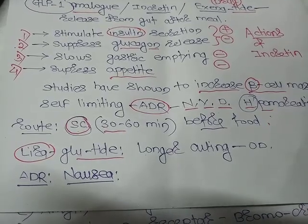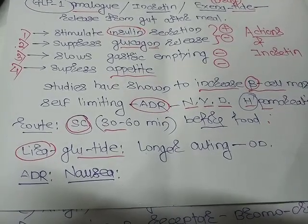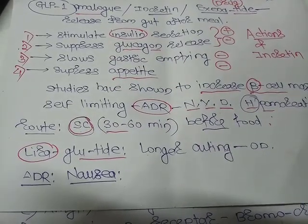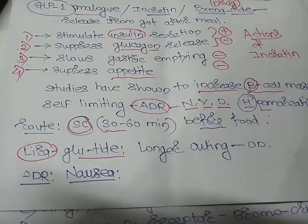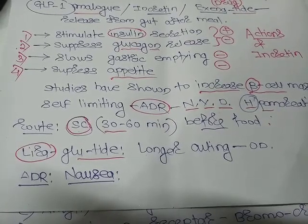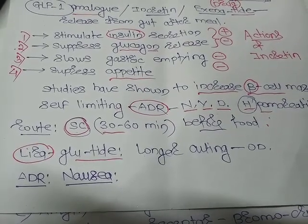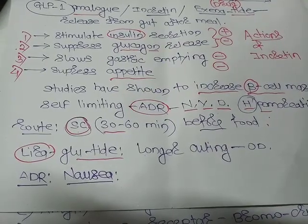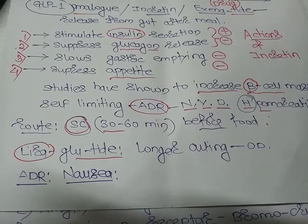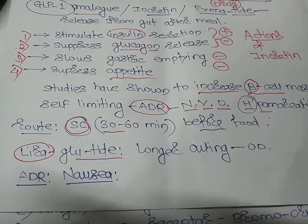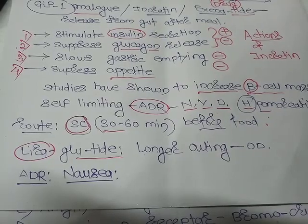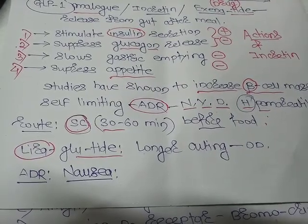GLP-1 means glucagon-like peptide-1, and it is also called as incretin. This GLP-1 or incretin is released from the gut after a meal. The key question is: what are the actions of GLP-1 or incretin on blood glucose levels?